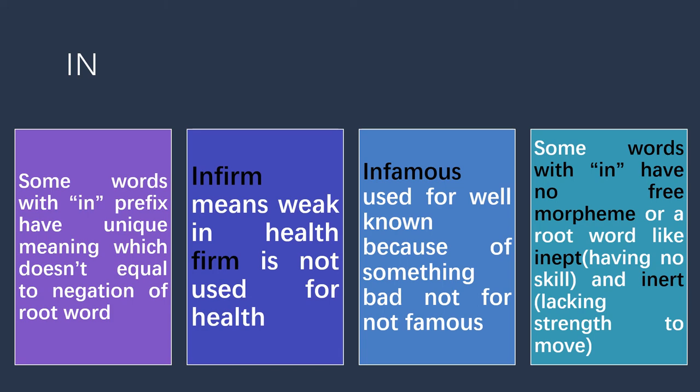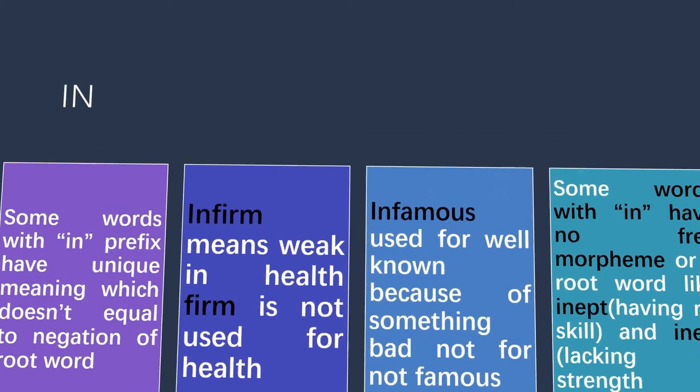Another special feature of 'in' is that sometimes words formed with the 'in' prefix may not have a free morpheme or root word. For example, 'inept' is used for someone who has no skills, but it is not opposite of 'apt' because there is no word 'apt' in English. Another example is 'inert,' used for something with no strength to move, but there is no root word 'ert' in English.